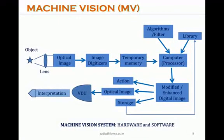Now let us see the machine vision system. We have seen that in the human vision system there was a lens, a sensor that converts light, communication, and a processor like the brain. That means there is hardware and software in our system, and similarly a machine vision system will also have hardware as well as software. In this diagram we are describing the machine vision elements in the system, and now I will explain the block diagram.